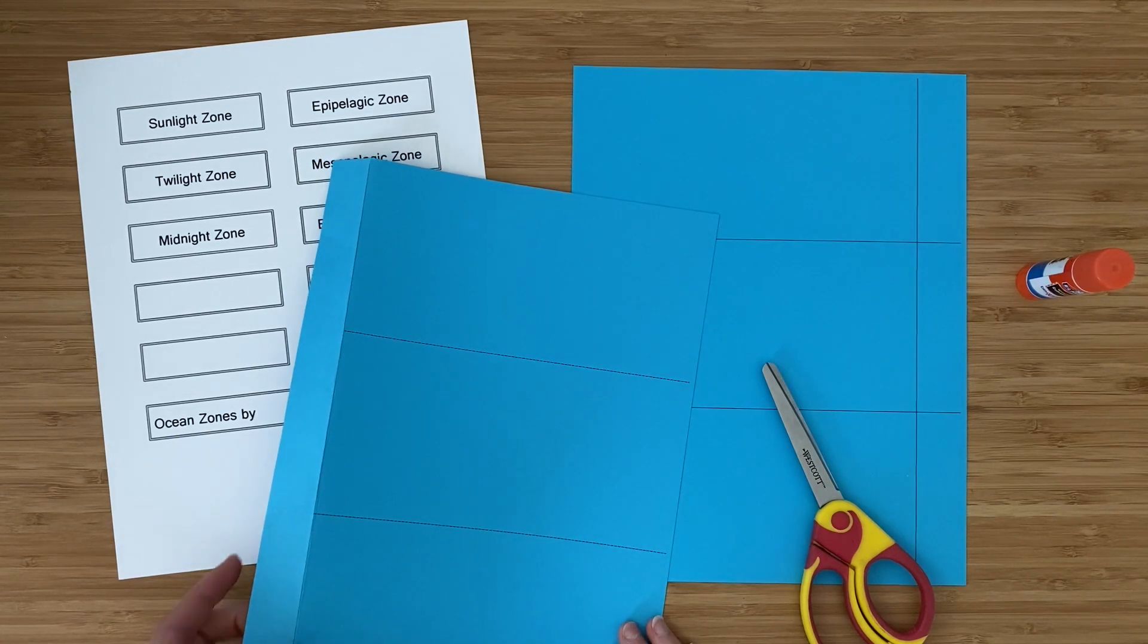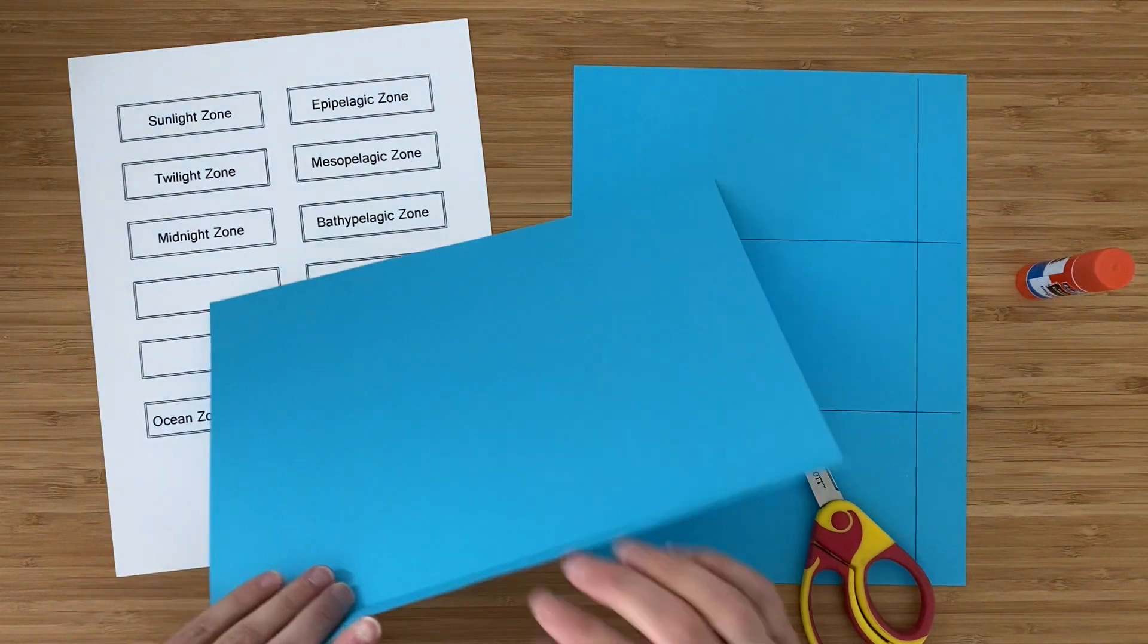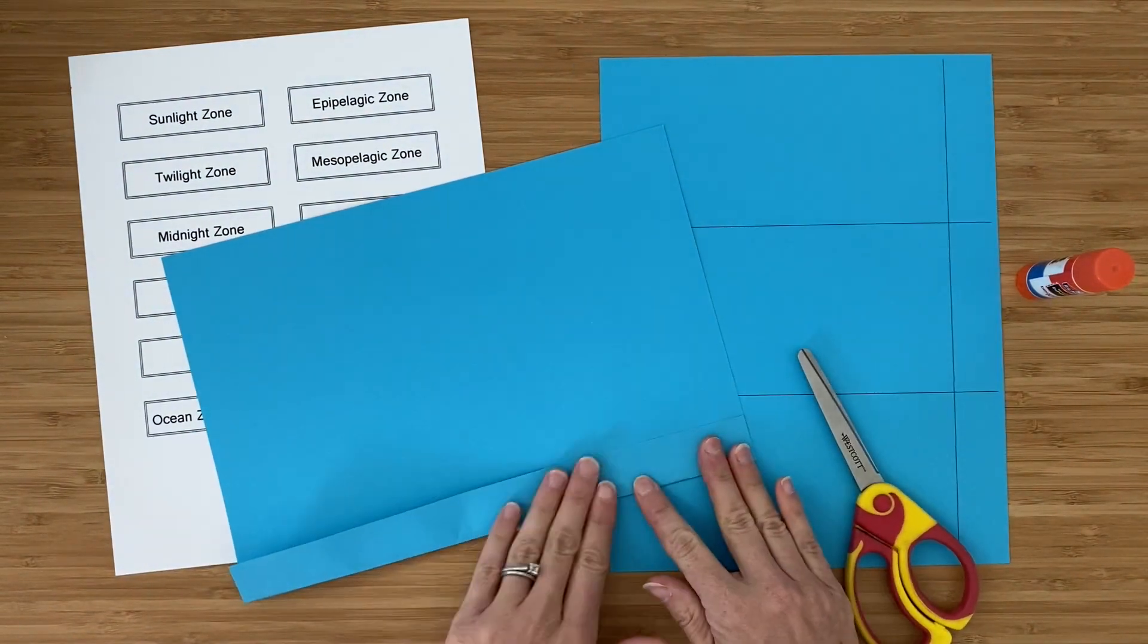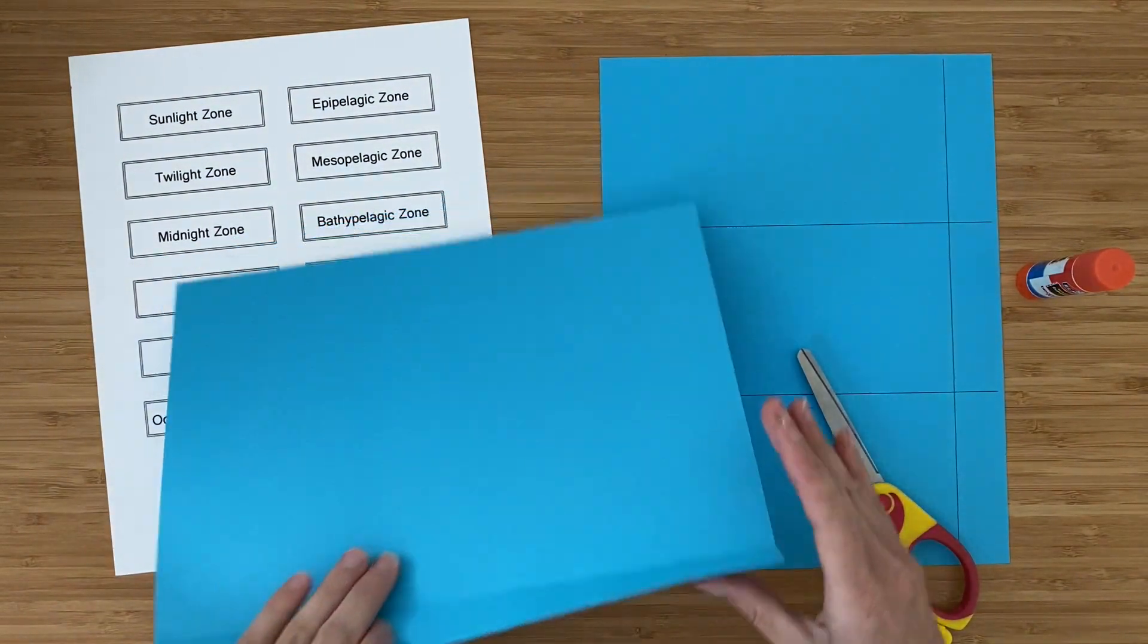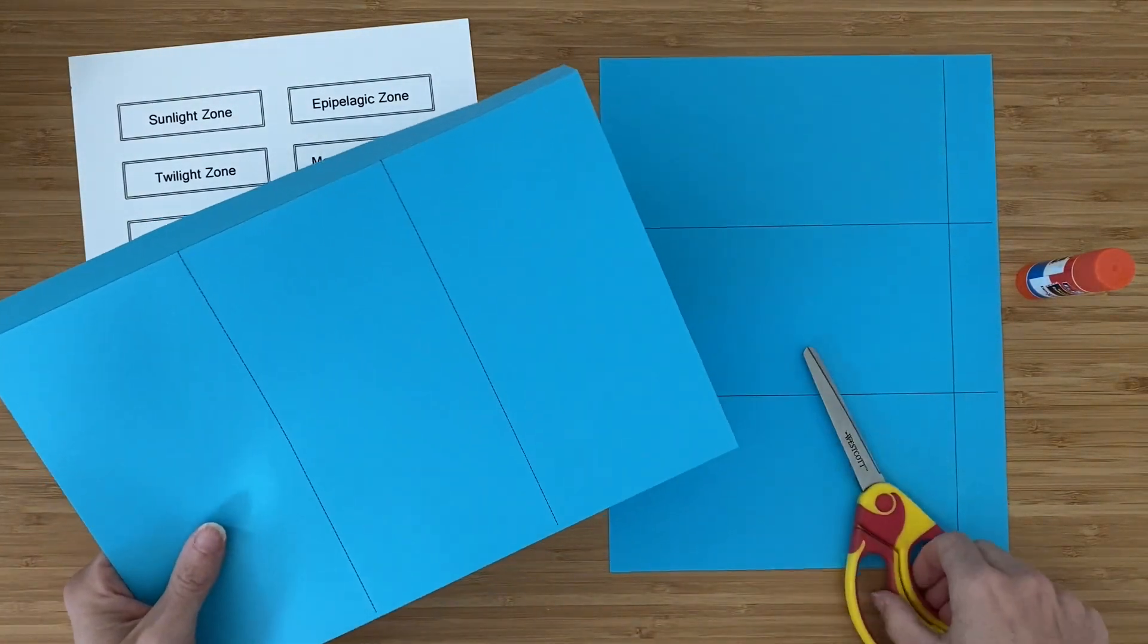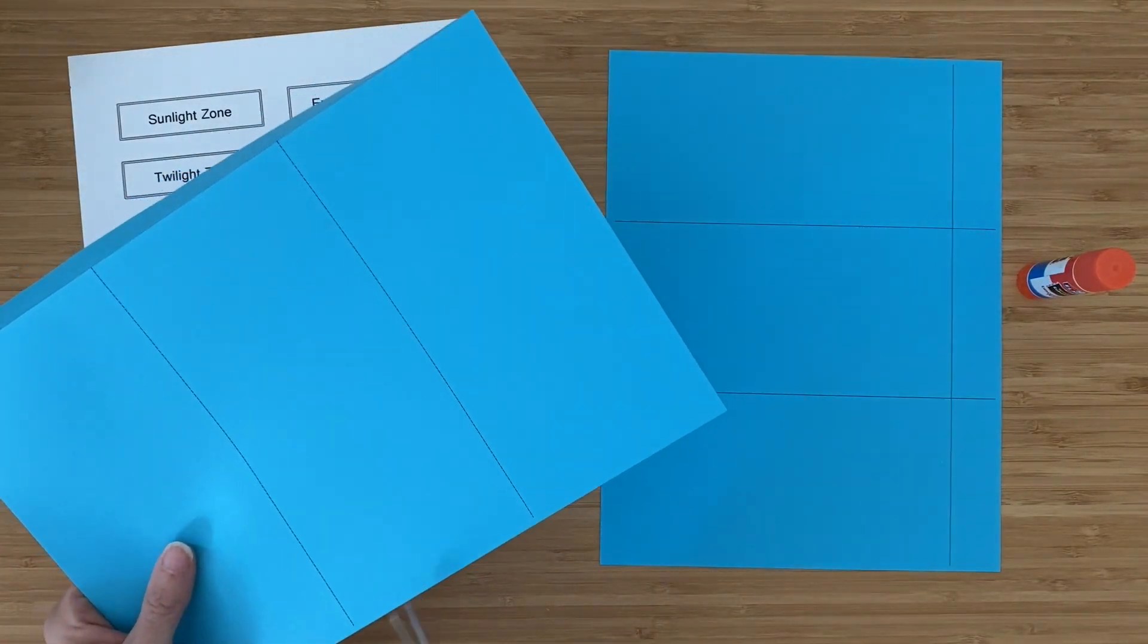Start by taking this page right here and folding backward on that gray dotted line, and then cut on your black dashed lines.